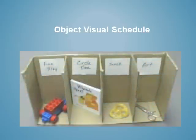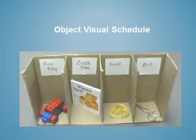Here's an example of an object visual schedule. You can see it goes from left to right, and in this case we're using objects to represent the activities or events that will occur. We will remove these objects one by one as each activity is done, helping the learner know what was completed and what comes next within this course of time.